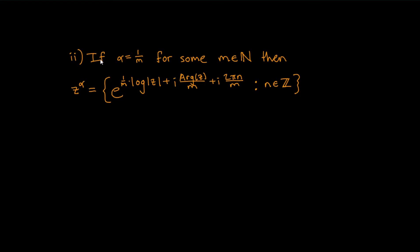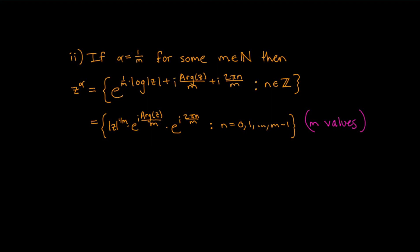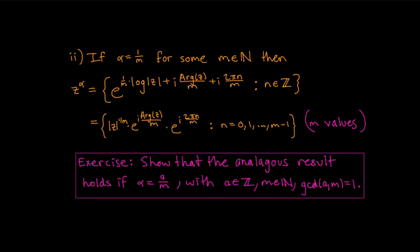Next, if α = 1/m for some positive integer m, then following the definition you get a set of values where the key piece is e^(i·2πn/m). As n runs through all integers, n/m runs through all fractions with denominator m and then just repeats. So you end up with a finite set containing exactly m distinct values. A similar exercise: show the analogous result holds when α = a/m where a is an integer, m is a natural number, and gcd(a, m) = 1.